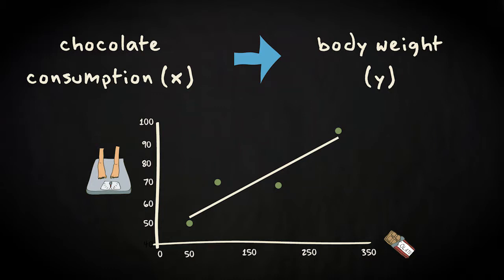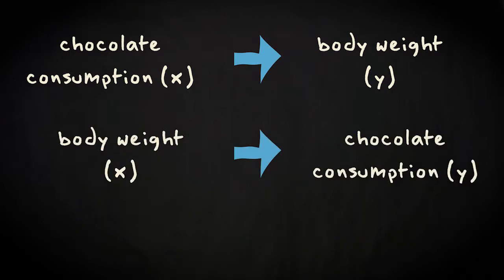It might also be the case that causality runs in the opposite direction. The correlation between the two variables could also have another reason. It might for instance be the case that people with more body weight are more hungry, and therefore eat more chocolate. This means that our x variable becomes your y variable, and your y variable becomes your x variable.